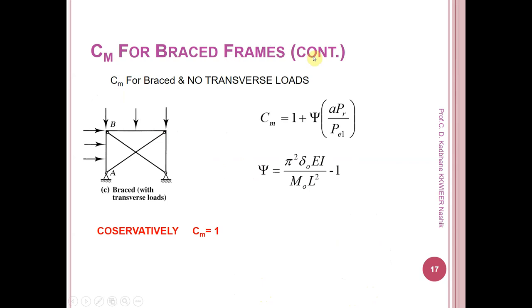CM for braced frames with lateral loads: there is a correction here — this case applies to braced frames with lateral loads present. Therefore, CM equals 1 plus PSI times (A times Pu divided by Pe1), where PSI equals pi-squared times delta_0 times EI divided by (M0 times L-squared) minus 1. Conservatively, CM may be taken as 1 in this case.